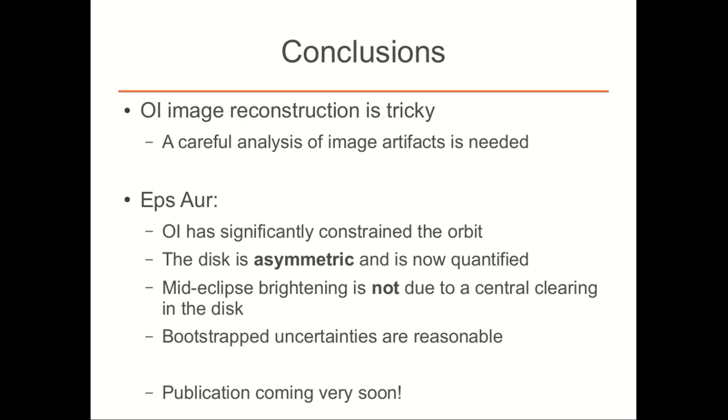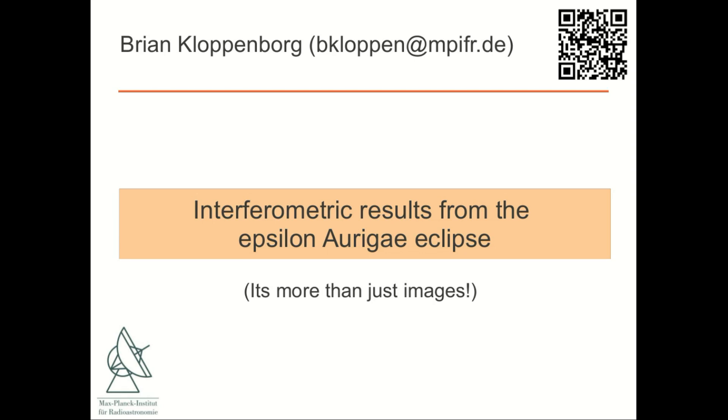Okay, so the conclusions from my talk is that OI image reconstruction is quite tricky, and you have to pay careful attention to the artifacts, at least at the present time. And then with Epsilon Aurigae, from our interferometric observations, we significantly constrain the orbit, the disk is asymmetric, mid-eclipse brightening is not due to a central clearing in the disk, and then we have fairly realistic uncertainties. And the publication on this work should be coming out very soon. Okay, so I guess now we'll open up to questions. If I'm not available for Skype, please feel free to contact me via email at bkloppen at mpifr.de. That's the Max Planck Institute for Radio Astronomy. Or you can scan the QR code in the upper right-hand corner of the screen to get a copy of this presentation from my website. Thank you very much.